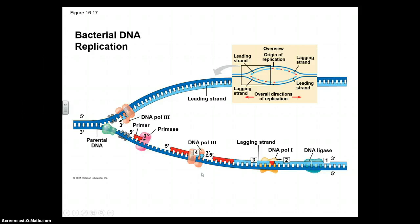This same process happens in bacteria. In bacterial DNA replication, you have your origin of replication, and the lagging strands are built in Okazaki fragments, which are then connected by DNA ligase.